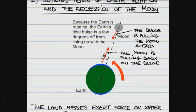At the same time, this bulge is actually trying to pull the Moon in this direction. I can break up this force that the bulge exerts on the Moon into a component along the axis connecting the centers of the Earth and Moon, and one perpendicular to it. The perpendicular component is actually trying to accelerate the Moon — to increase its speed.